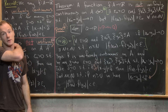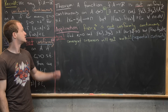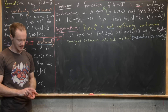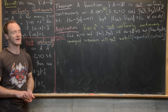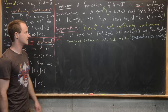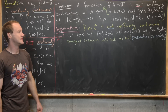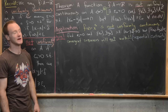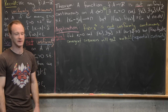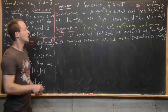Now we apply the theorem to show once and for all that f(x) = x³ is not uniformly continuous. We had evidence before, but now we prove it rigorously. Our goal is to find epsilon-naught > 0 and two sequences (xn), (yn) such that |xn − yn| → 0 but |f(xn) − f(yn)| ≥ epsilon-naught for all n.